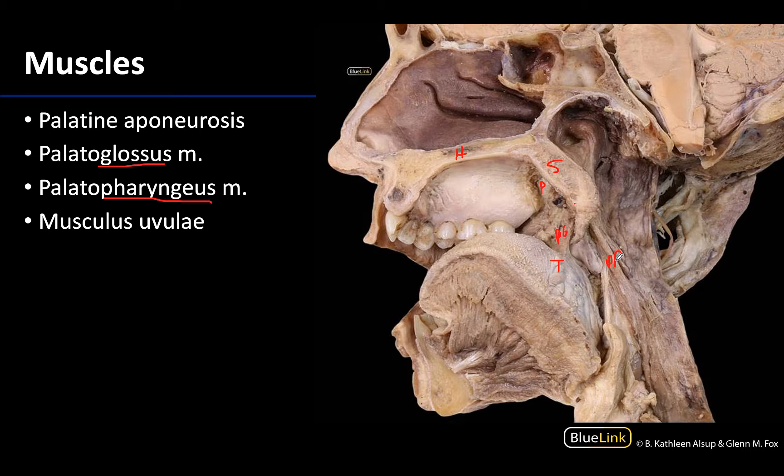You can imagine that if these muscles contract and shorten, they will more greatly affect the more distal structure — so the tongue and the pharynx — and less so in terms of the soft palate.